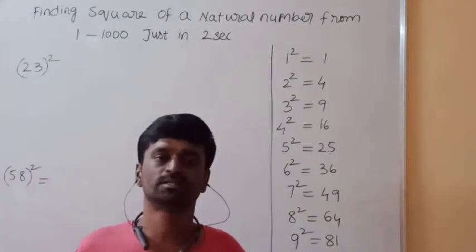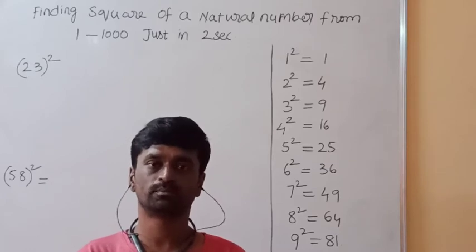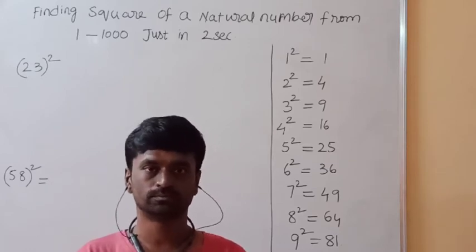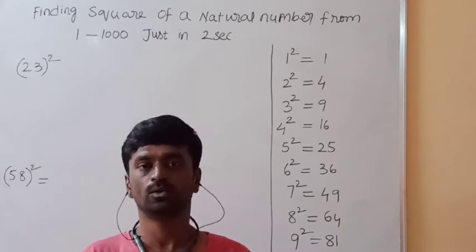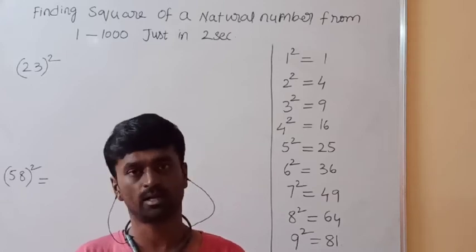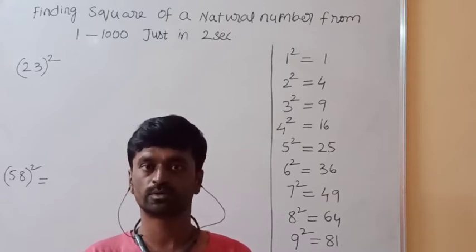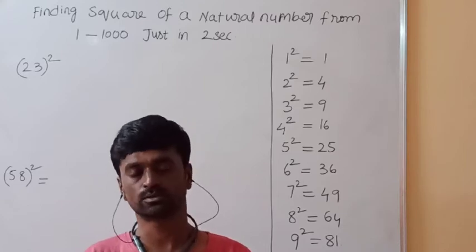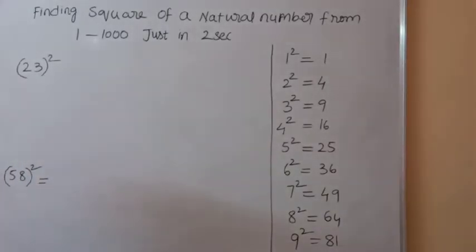Hi, my dear students, myself Ketarnak. Welcome to my channel 'Make Mathematics Simple'. In this session, I am going to explain how to find the square of a natural number from one to thousand. Look at the example: 23 square. How to find 23 square within two seconds?